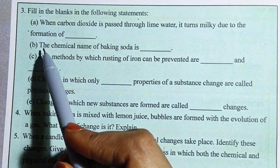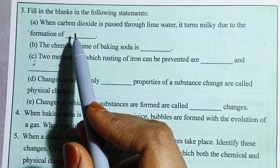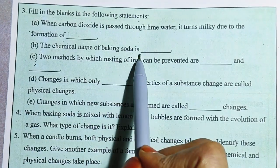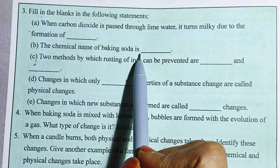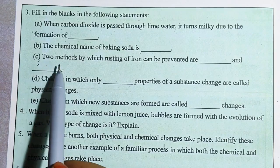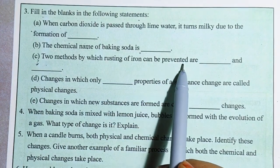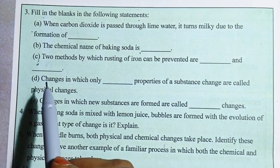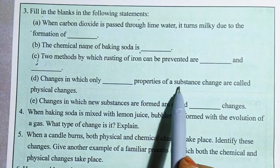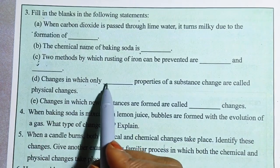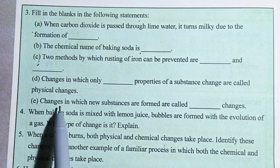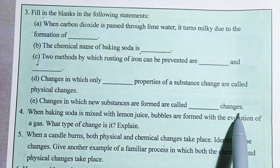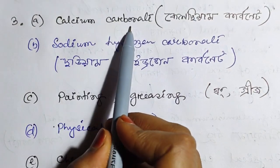Which is not a chemical change? Number B: The chemical name of baking soda is sodium hydrogen carbonate. Two methods by which rusting of iron can be prevented are painting and greasing. Changes in which new substances are formed are called chemical changes.